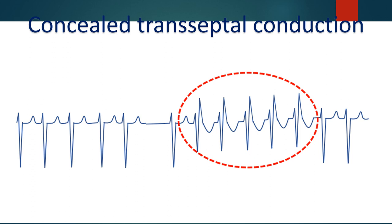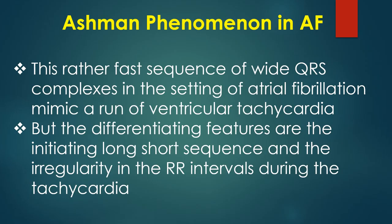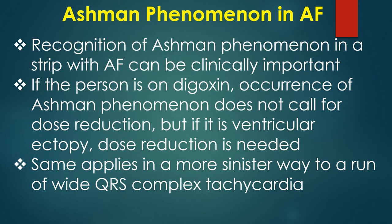Aberrancy can be maintained in subsequent beats due to concealed transseptal conduction which keeps the right bundle branch refractory. This rapid sequence of wide QRS complexes in the setting of atrial fibrillation can mimic a run of ventricular tachycardia. Differentiating features are the initiating long-short sequence and the irregularity in RR interval during the tachycardia.